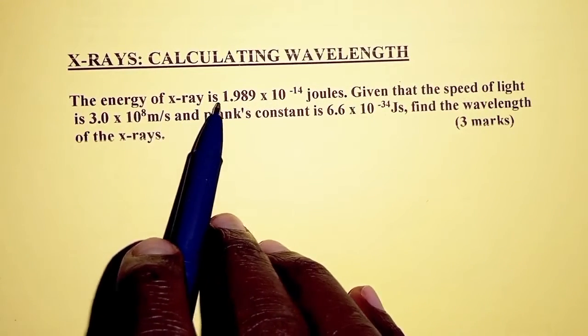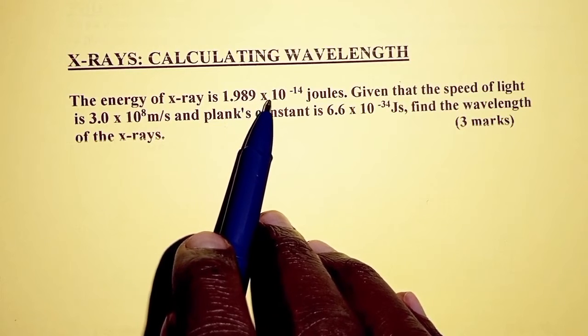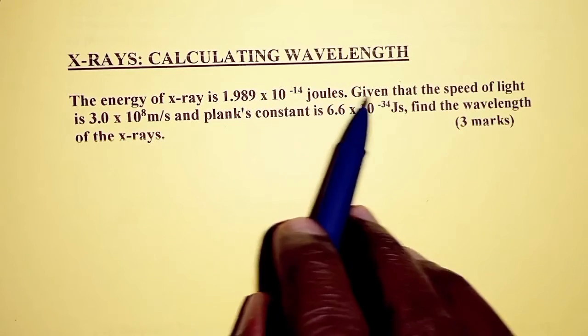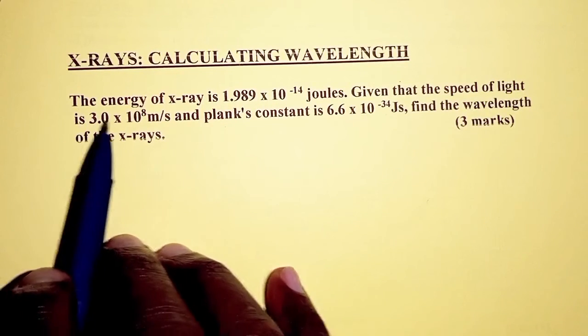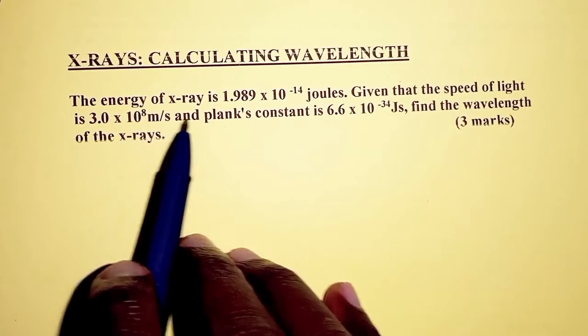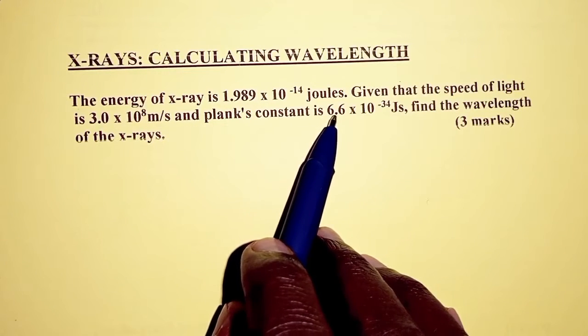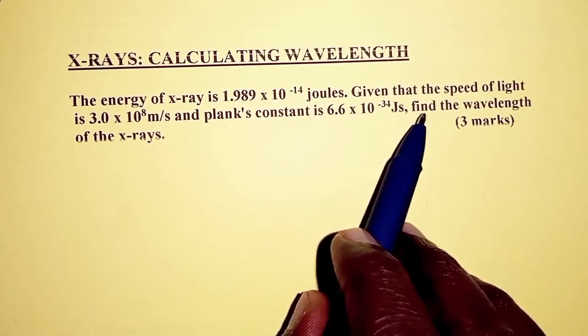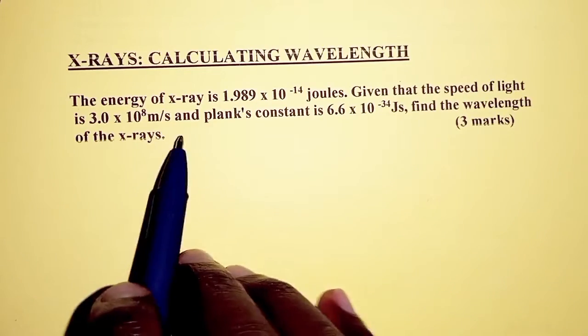The energy of x-rays is 1.989 times 10 power negative 14 joules. Given that the speed of light is 3 times 10 power 8 meters per second and Planck's constant is 6.6 times 10 power negative 34 joules second, find the wavelength of the x-rays.